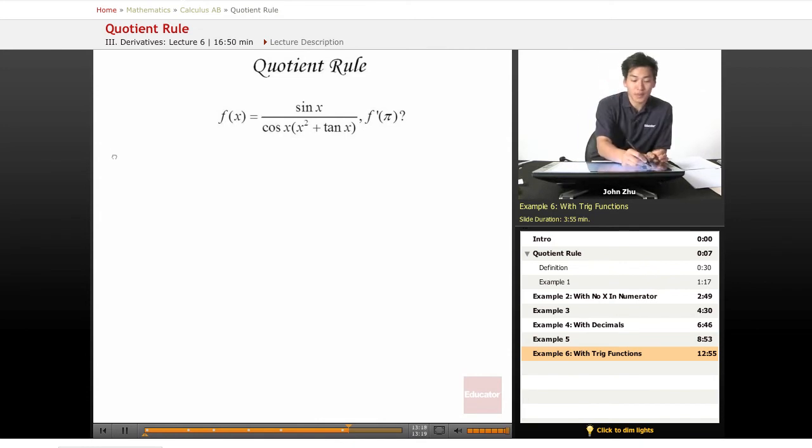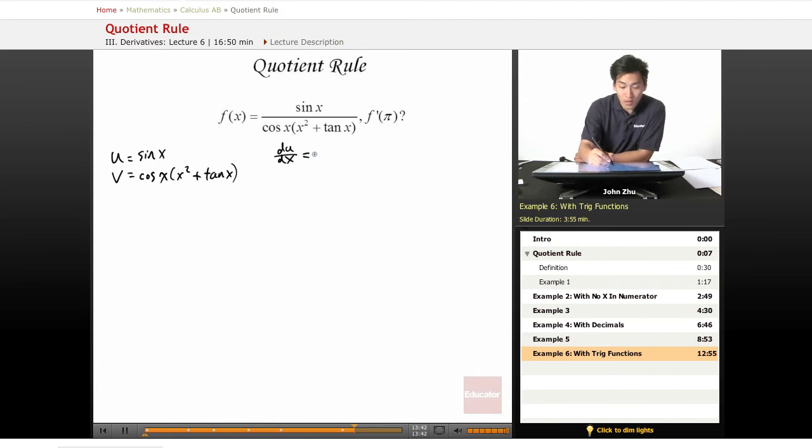Let's set up the quotient rule first. If our u equals sine of x and our v equals cosine x times x squared plus tangent of x, we can say that our du dx equals cosine of x, and our dv dx - well we have to apply the product rule first, so we'll come back to that and just leave the term as dv dx.